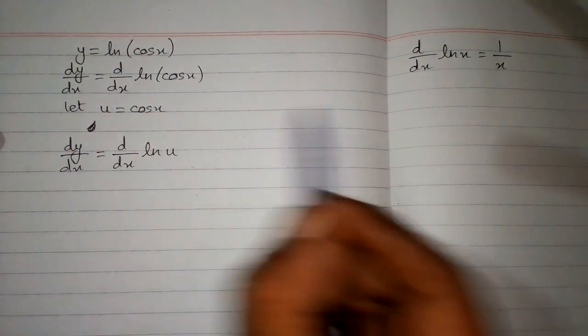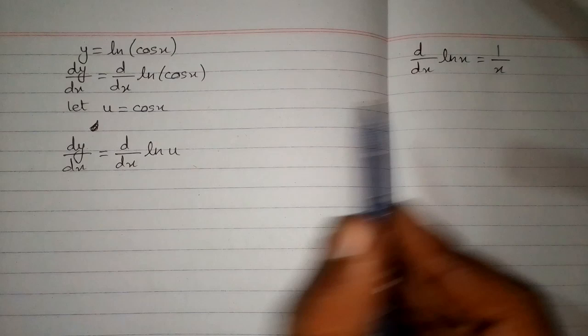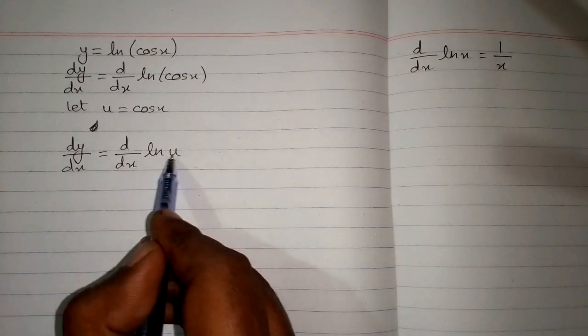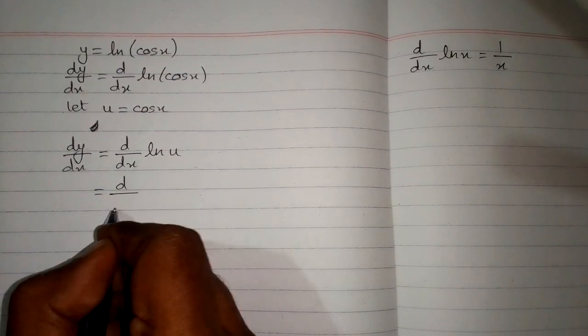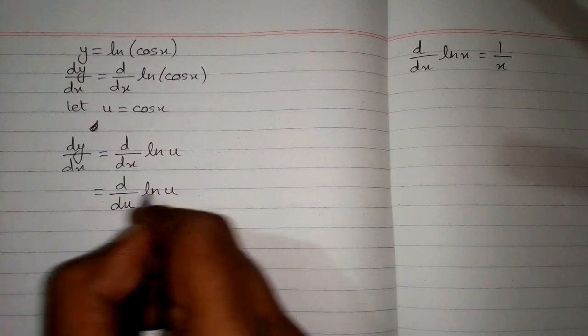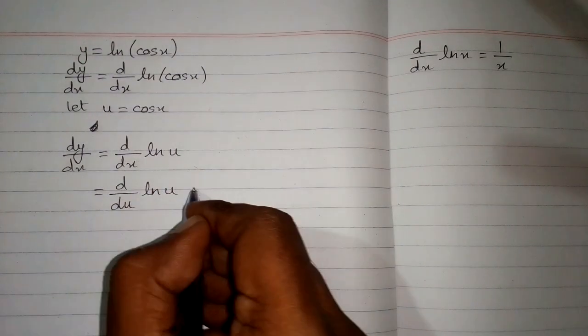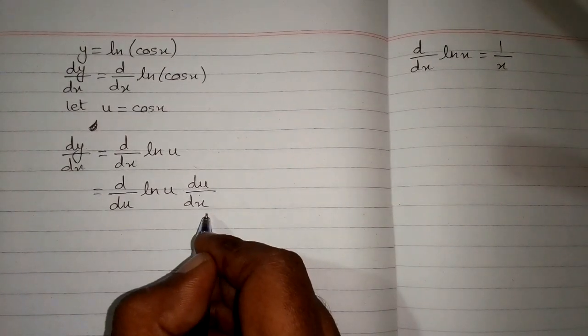Now again we cannot apply this formula because this variable and this variable must be same. And here we have u and x and they are different. So we must have du in place of this dx. So we will write du in place of dx and multiply it by du by dx. This is called the chain rule of differentiation.